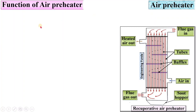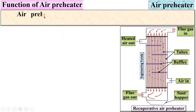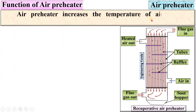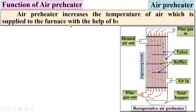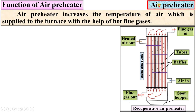The function of air preheater: air preheater increases the temperature of the air which is supplied to the furnace with the help of the hot flue gases. It is used to increase the temperature of the air before supplying it to the furnace, with the help of the waste fuel gases.